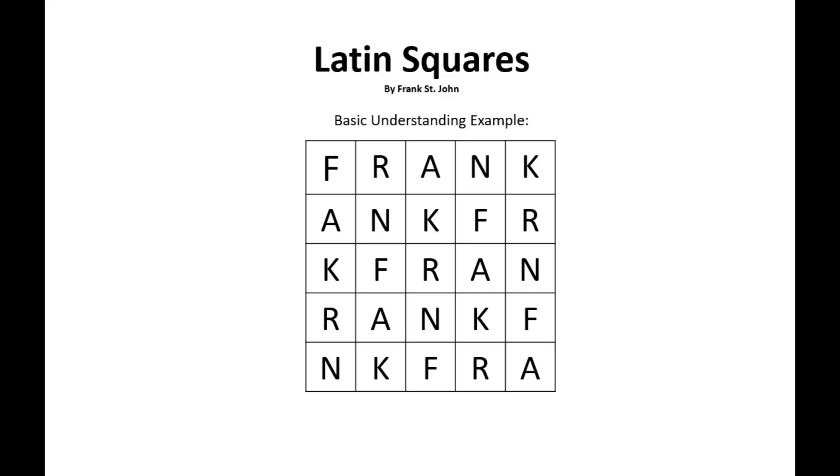Latin square designs traditionally hold alphabetical letters that do not occur more than once in each row or each column. As you can see here, my name Frank, the letter F does not appear more than once in the columns across and the rows that go down, and the same goes for R, A, N, K, and so on.